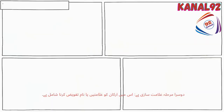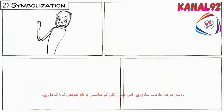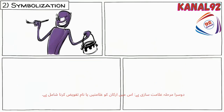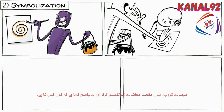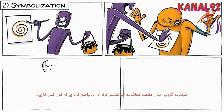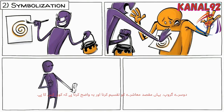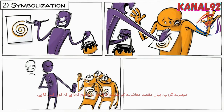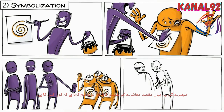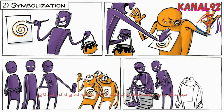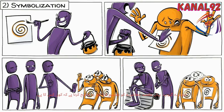The second stage is symbolization. This involves assigning symbols or names to members of the other group. The goal here is to split the society and make it clear who belongs to who.